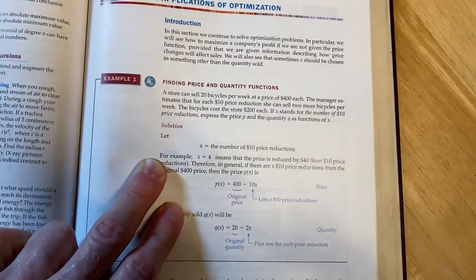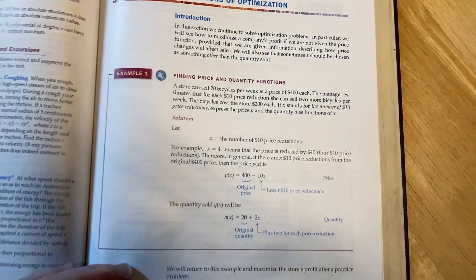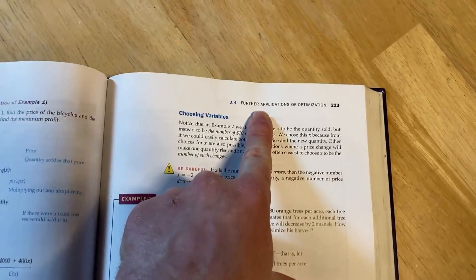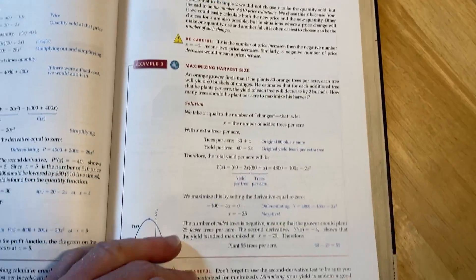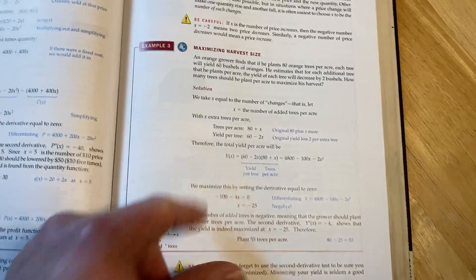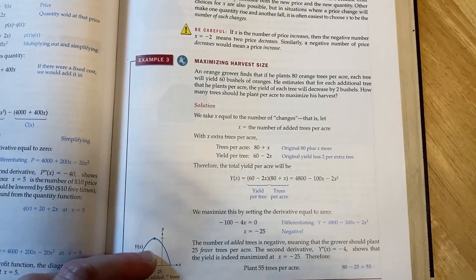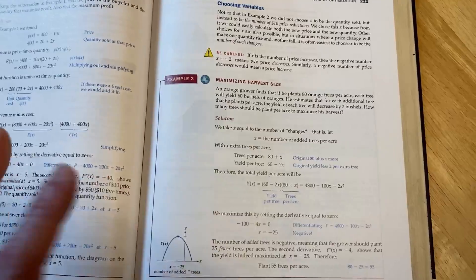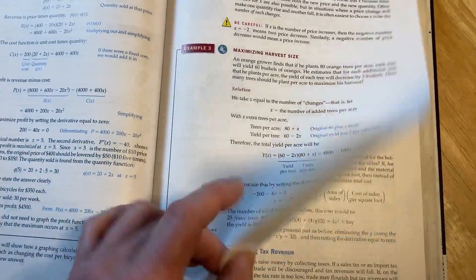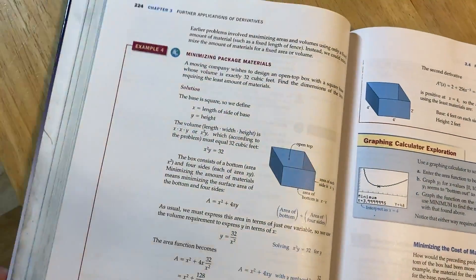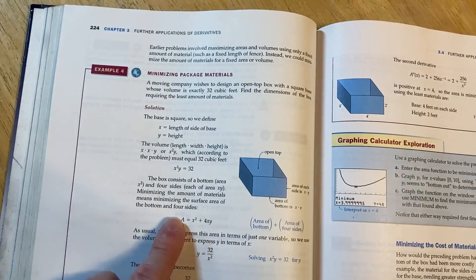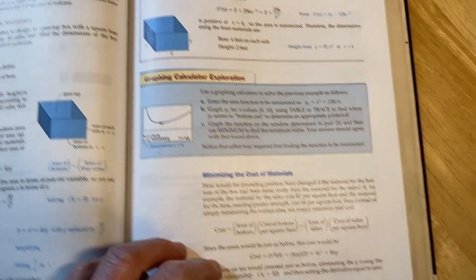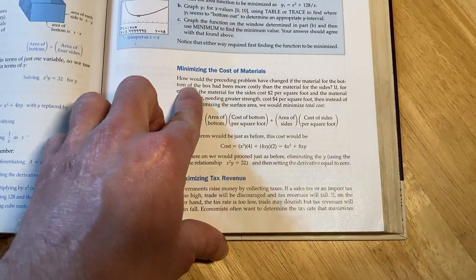For example here we have a problem where we're finding price and quantity functions. This is a section on optimization. Further applications of optimization. And it does have some harder problems like this one here, maximizing harvest size. This is something that again you won't see unless you take a business calculus class. But it's in this book. This is something you might see in a regular calculus class, this stuff here with the package materials.